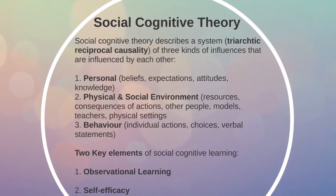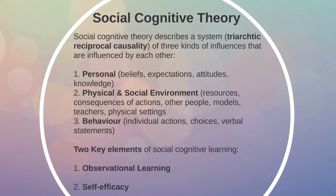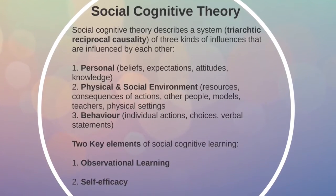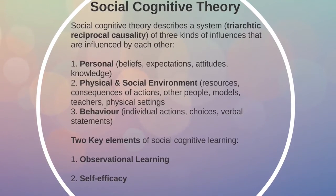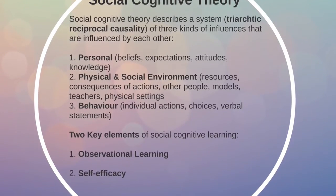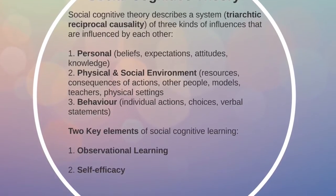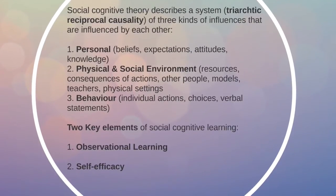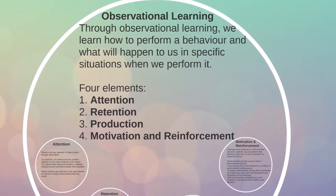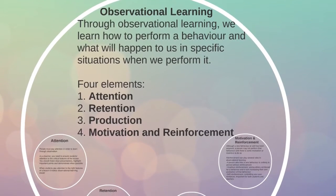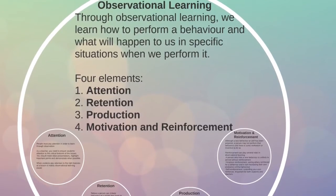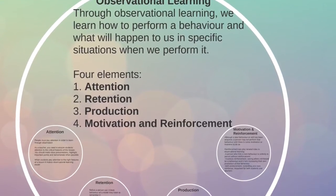His theory describes a system of three factors that are continuously influenced by one another: personal, the physical and social environment, and behavior. The social cognitive theory has two key elements: observational learning and self-efficacy. Observational learning has four key elements: attention, retention, production, and motivation and reinforcement.